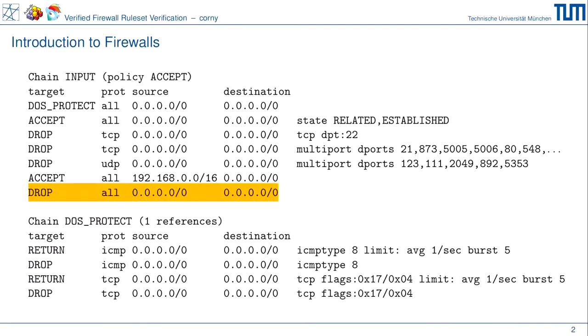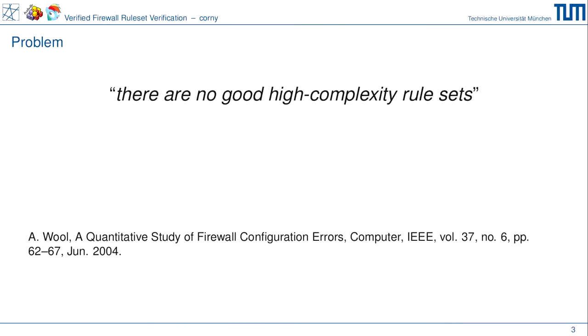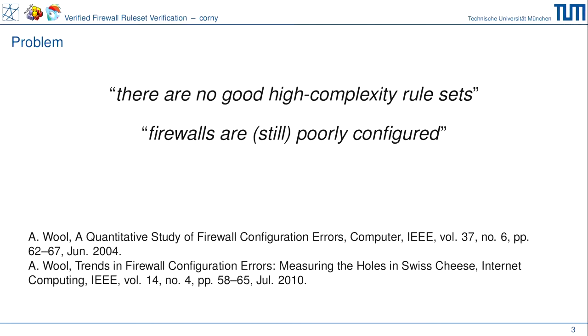So what's the problem with firewalls? Everyone loves open source solutions — we don't have to care about backdoors or proprietary software. We love our Linux or BSD firewalls. But there was a study that looked at real-world enterprise firewalls and found there are no good high-complexity rule sets. The main problem with firewalls is administrating them — setting them up — which all comes down to configuring the ruleset. A ruleset like what we saw on the slide before was actually quite simple. A study repeated this finding a few years later and still found firewalls are poorly configured.